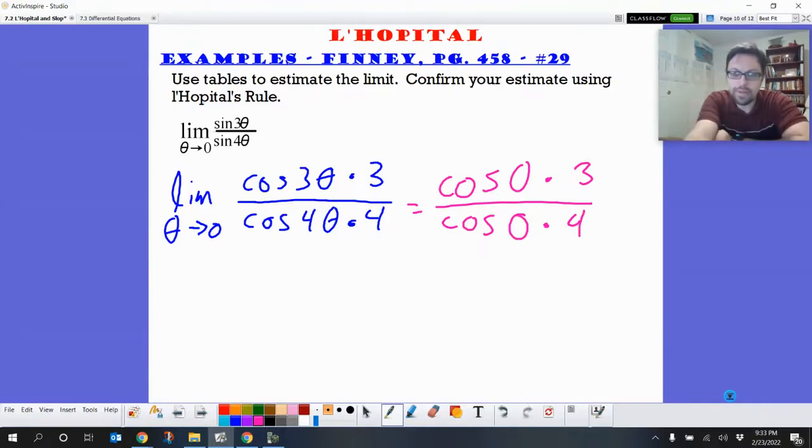We get 3 times our theta, is going to be the cosine of 0 multiplied by 3 over the cosine of 0 multiplied by 4. Well, the cosine of 0, that's just 1, both the numerator and the denominator. So we get 3 fourths. I think that's pretty good for 0.75.